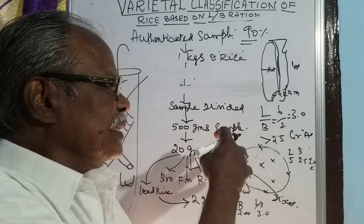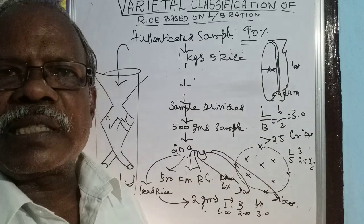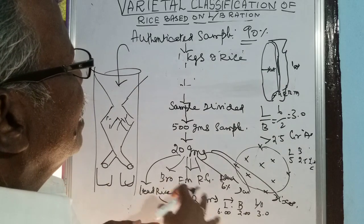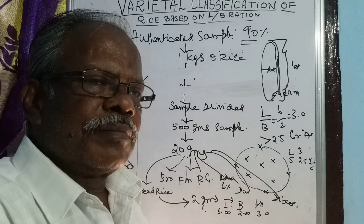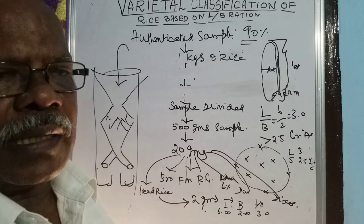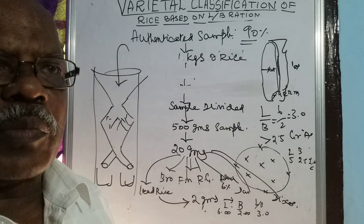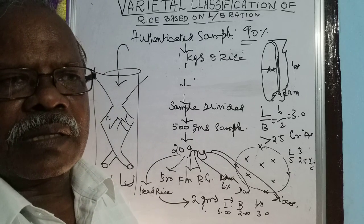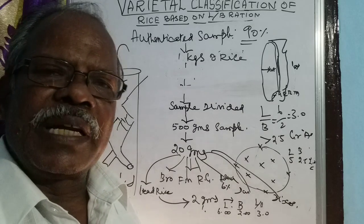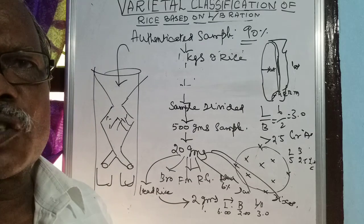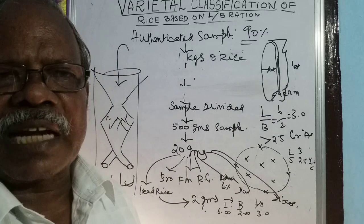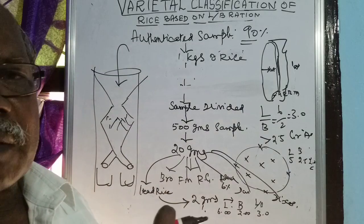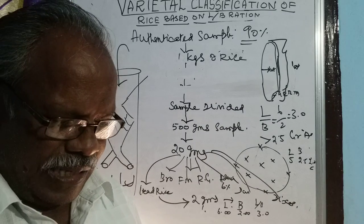Length, breadth, and thickness of rice grains are very important parameters. At the time of procurement, we should be very careful in fixing the variety. If common admixture in a Grade A sample exceeds 6–10%, it should be downgraded to common. 90% purity is required for Grade A classification; if admixture is 10% or more, the lot should be downgraded. With this, we complete this video.